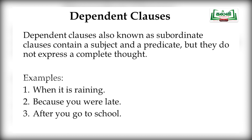Example of a dependent clause: 'When it is raining.' Here, 'it' is the subject and 'is raining' is the verb, so subject plus verb fulfills the condition of a clause. But regarding meaning, it has to rely upon another sentence. Hence, 'when it is raining' is an example of a dependent clause. Second: 'Because you were late' — 'you' subject, 'were late' verb, but it has to rely upon another sentence to give complete meaning. Hence, it is a dependent clause.